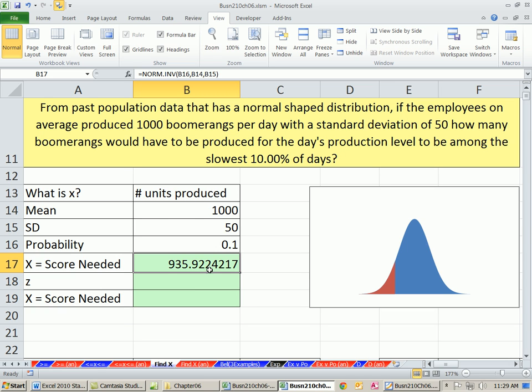So about 936 boomerangs or less. Any day with a production total like that would be in the 10% slowest days.